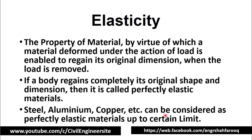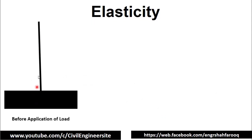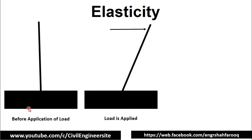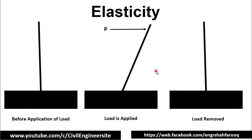Now we will clearly understand the concept of elasticity by discussing this diagram. Suppose we have a vertical steel rod; before application of load, it is straight and vertical. If we apply a certain load on it, the rod bends towards the right, and if the load is removed, the rod comes back to its original position.